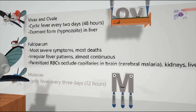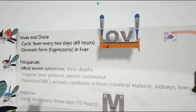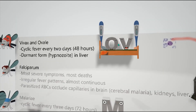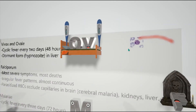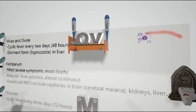We have vivax and ovale. V and O are shown in the bed, sort of sleeping, because vivax and ovale can lie dormant as the hypnozoite form in the liver — that's why there's a picture of the liver on the bed. The two thermometers remind us that the cyclic fever in vivax and ovale is every two days, every 48 hours, occurring on day one and day three. We also have a blood smear with a picture, which we'll explain in a second.